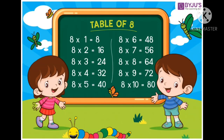8 ones are 8, 8 twos are 16, 8 threes are 24, 8 fours are 32, 8 fives are 40,